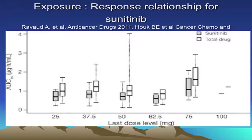Regarding exposure and dose response in kidney cancer, what we know about sunitinib is that increasing dose can result in better exposure, and studies show improvement in efficacy with increasing dose. However, toxicities also increase, and it is not a direct relationship — some patients at 50 mg or even lower doses have equal PK or AUC values as somebody receiving a much higher dose of 75 mg sunitinib.